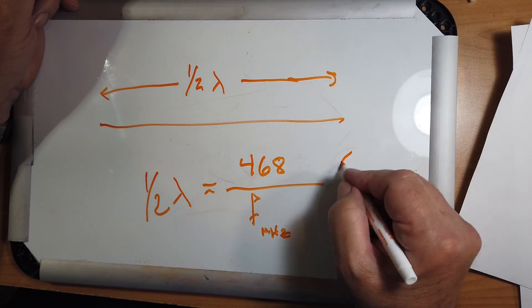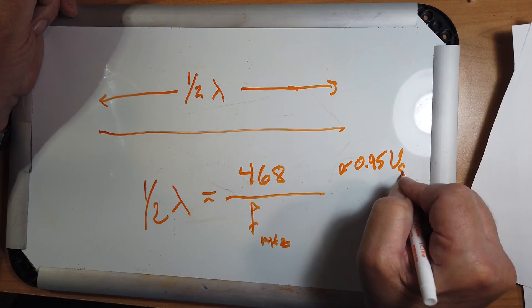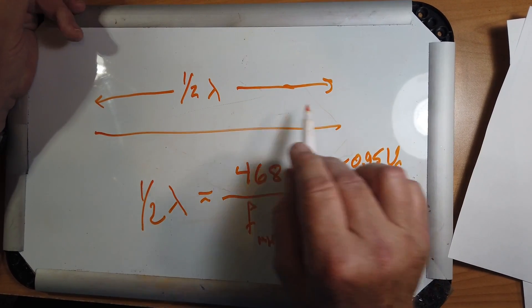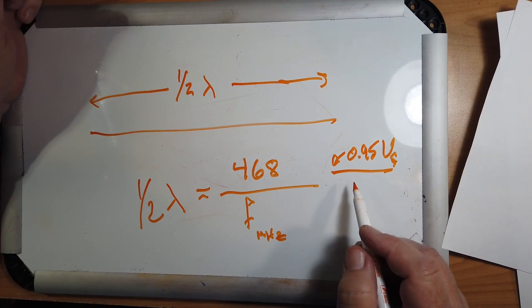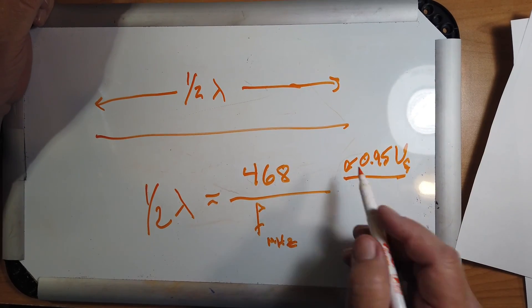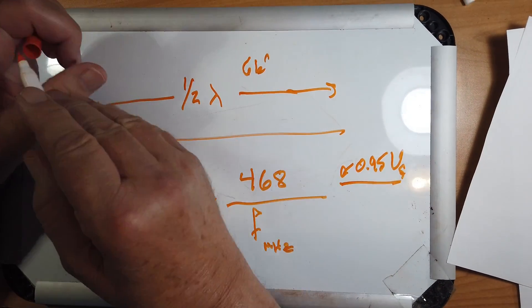This takes into account the 0.95 velocity factor for RF in wire, as opposed to air. So for 40 meters, this works out to about 66 feet, the whole length of the dipole.